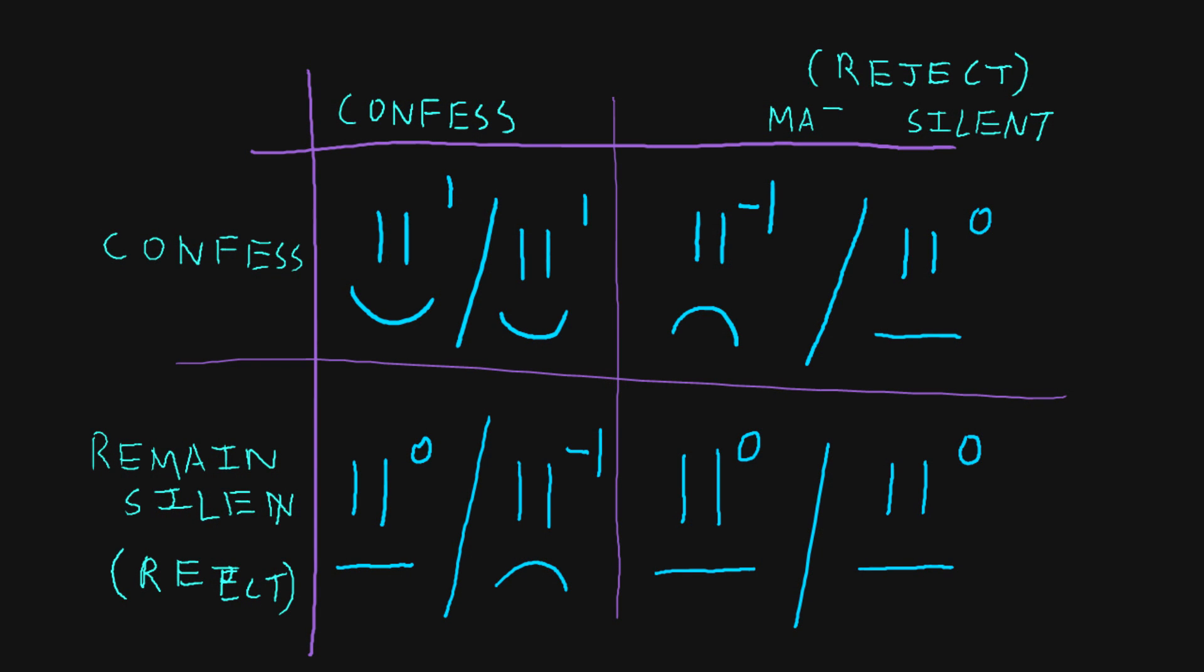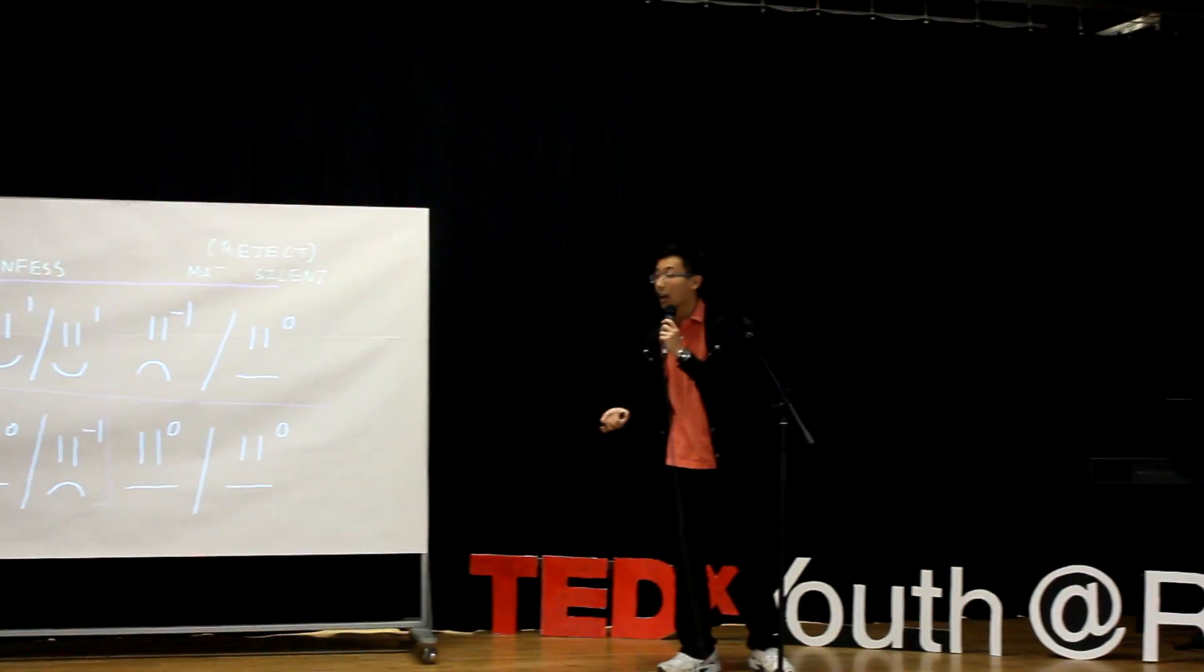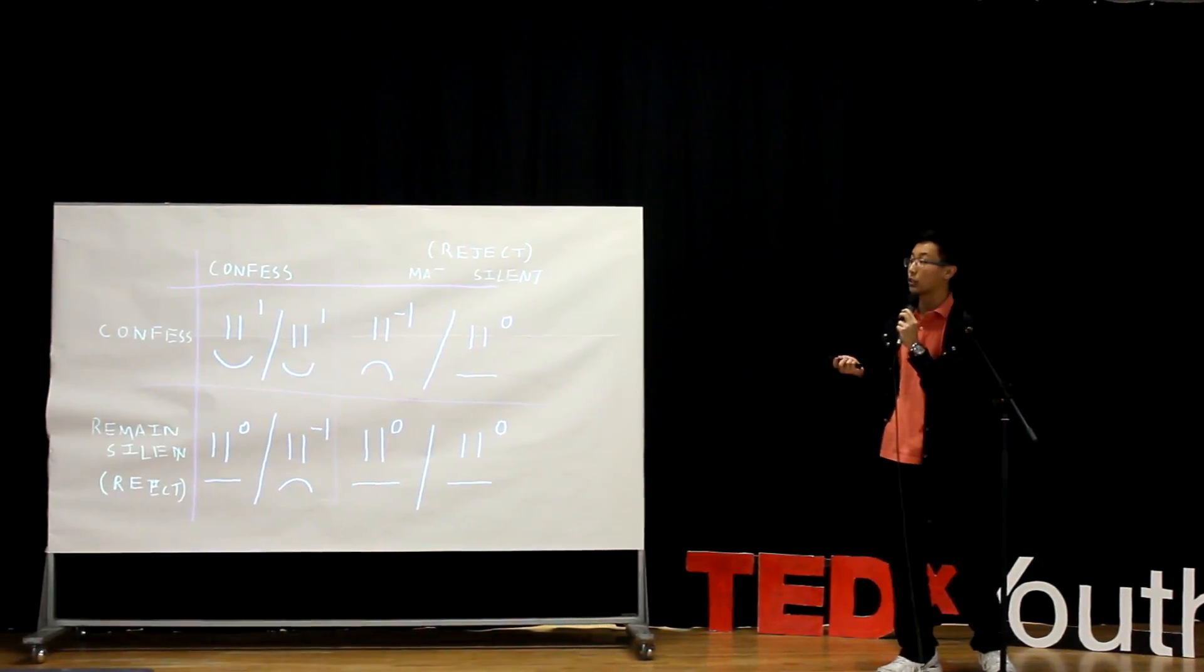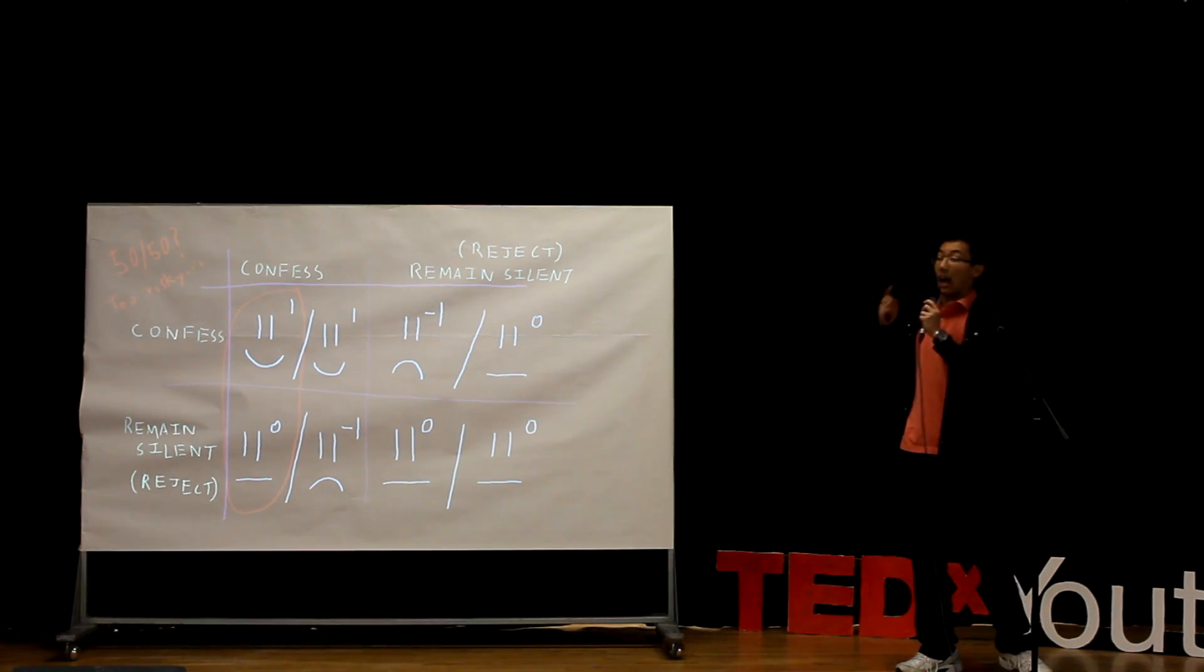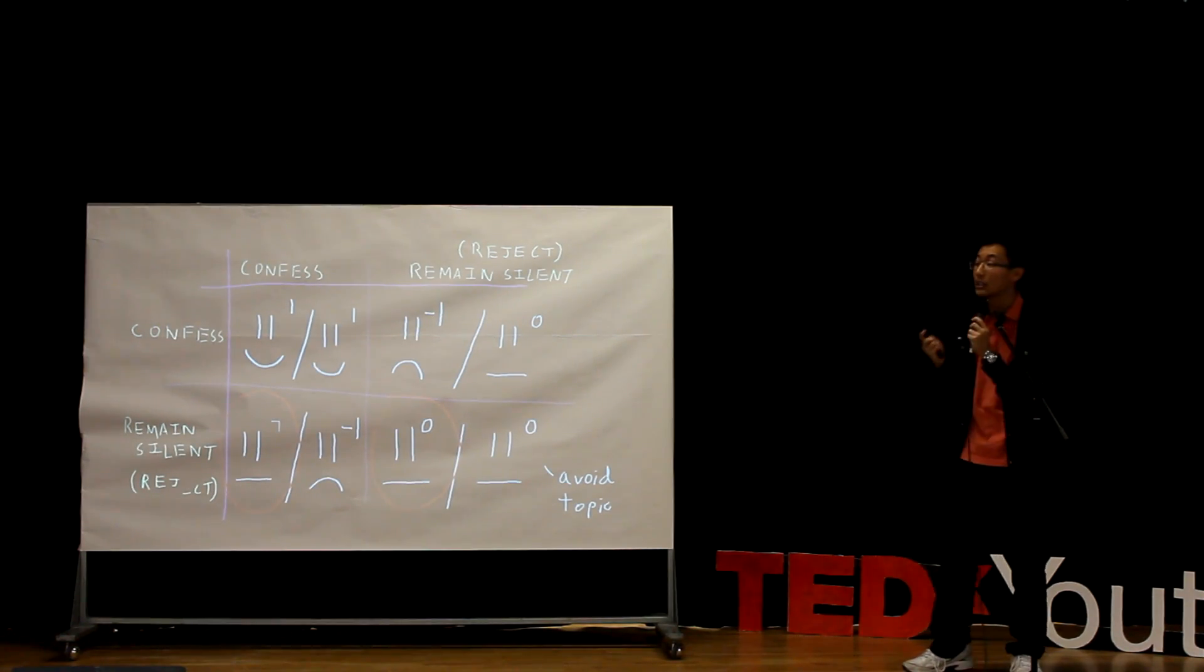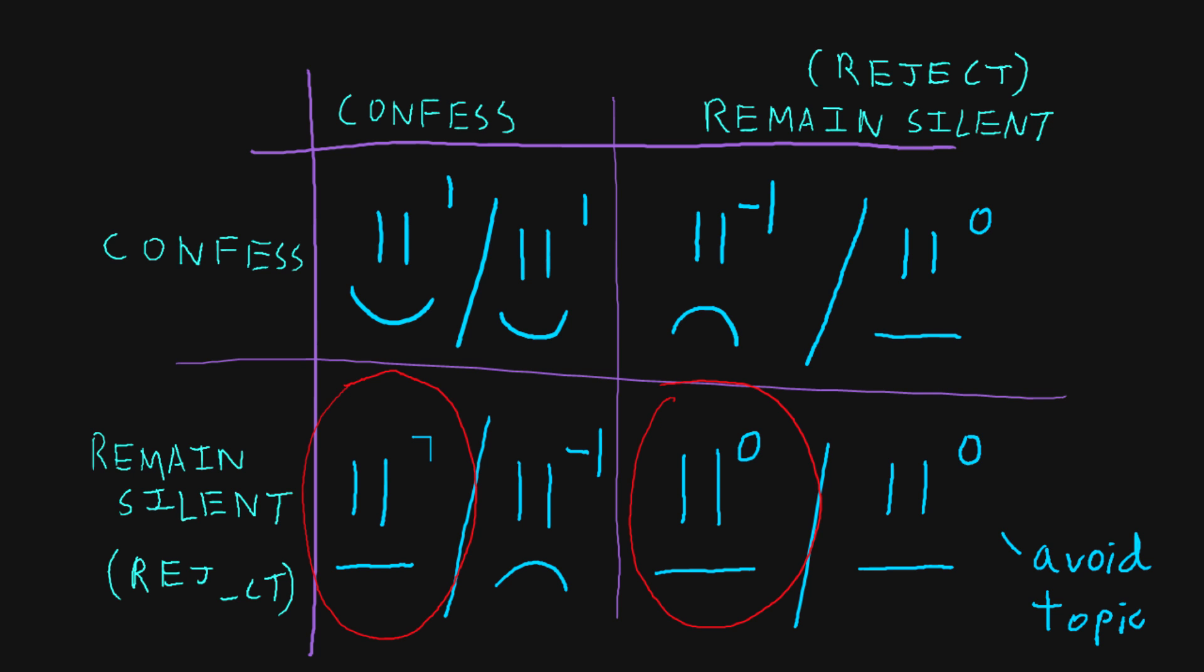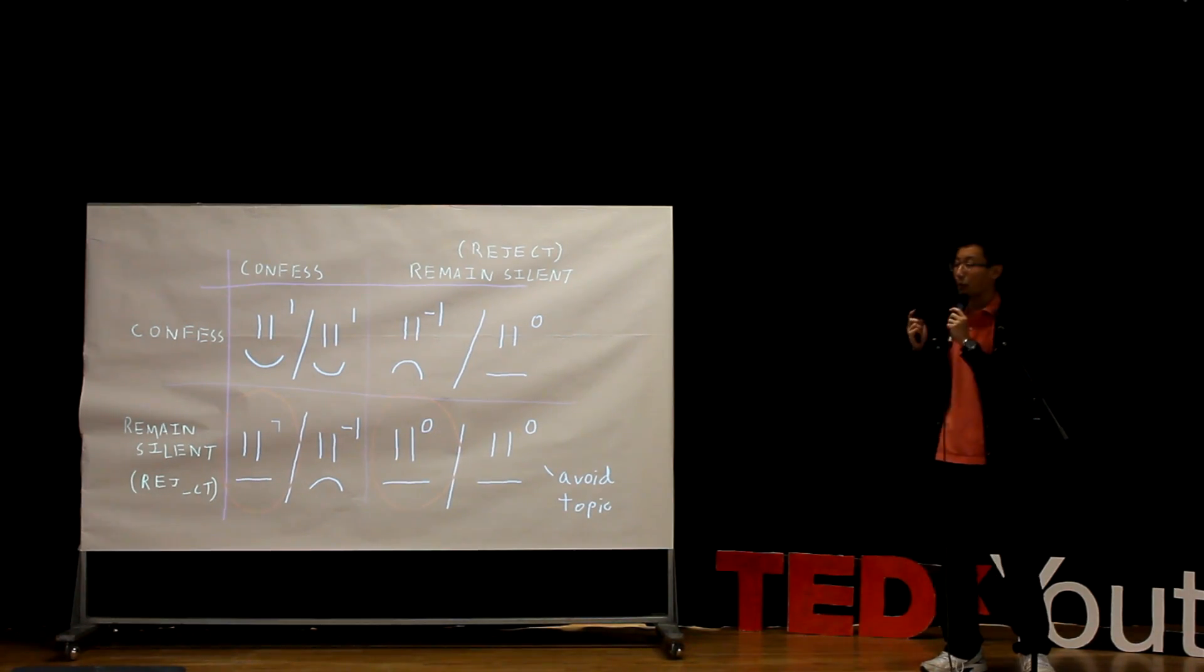So by construction of the simple 2x2 decision matrix, game theorists can determine that the dominant strategy in this scenario would be to remain silent. This can be seen in the decision probabilities matrix in this decision matrix. If you, as an individual, choose to confess to someone, then you would have a 50% chance of arriving at a positive outcome and a 50% chance of arriving at a negative outcome. However, if you choose to remain silent, then you would have a 100% chance, a guaranteed chance to arrive at a neutral or unaffected outcome. Thus, the dominant strategy in this scenario, as game theorists would put it.